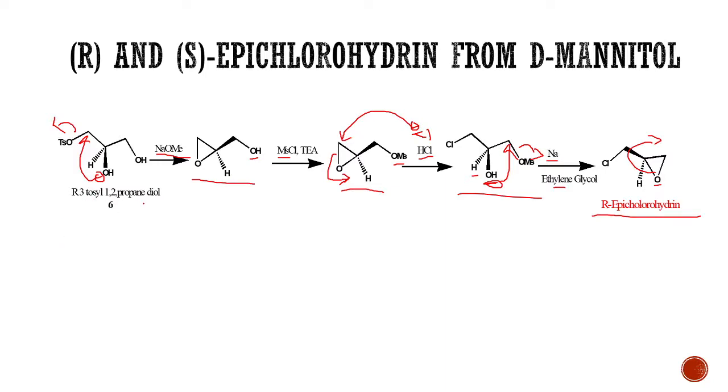This R-3-tosyl-1,2-propanediol is also a very useful intermediate for the formation of S-epichlorohydrin. Formation of S-epichlorohydrin from intermediate 6 is very simple because it only involves two steps.